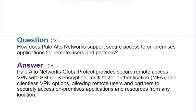Next interview question: How does Palo Alto Networks support secure access to on-premises applications for remote users and partners? Your answer should be: Palo Alto Networks GlobalProtect provides secure remote access VPN with SSL/TLS encryption, multi-factor authentication (MFA), and clientless VPN options, allowing remote users and partners to securely access on-premises applications and resources from any location.